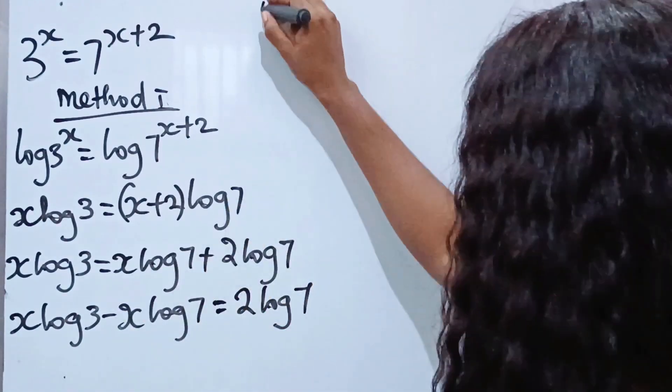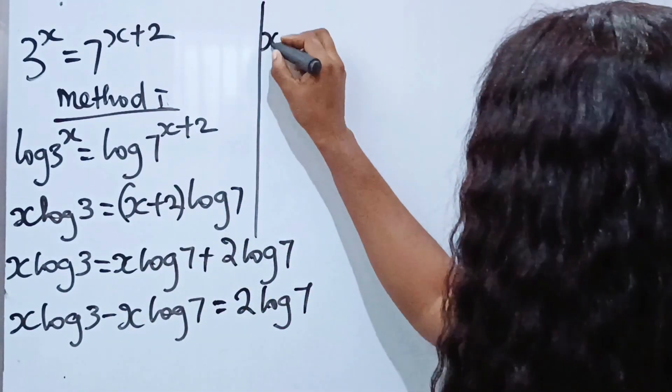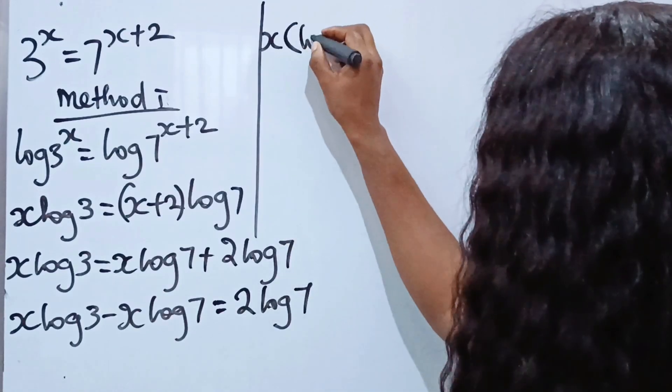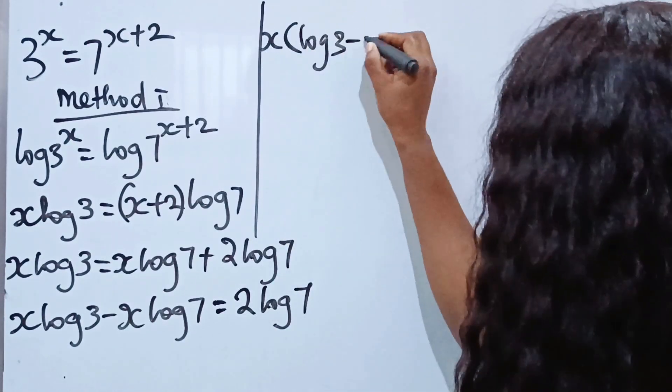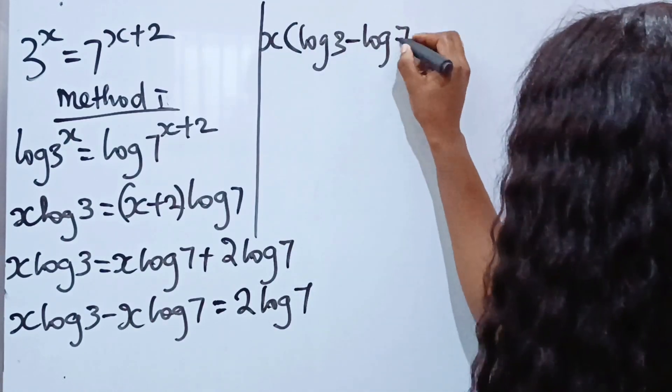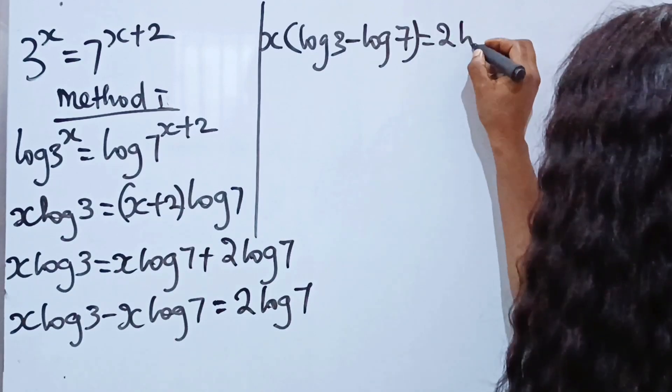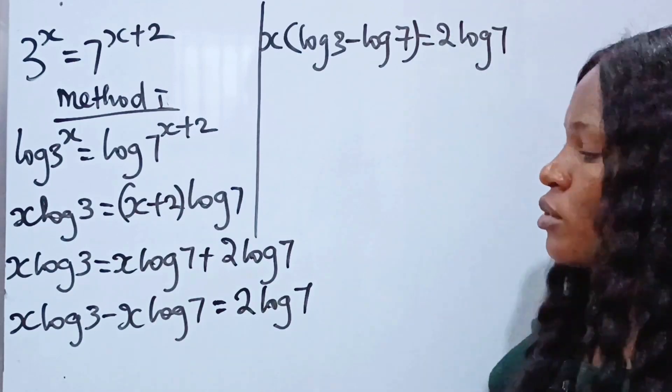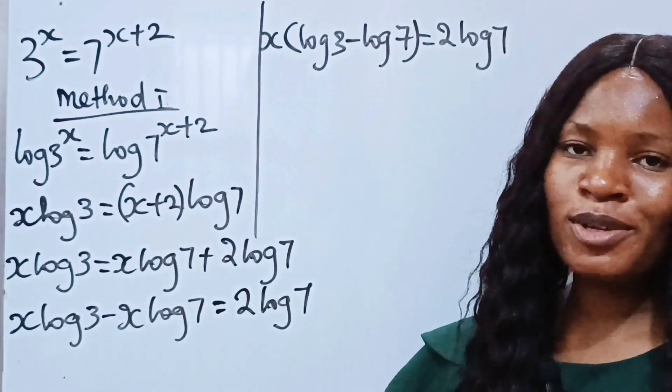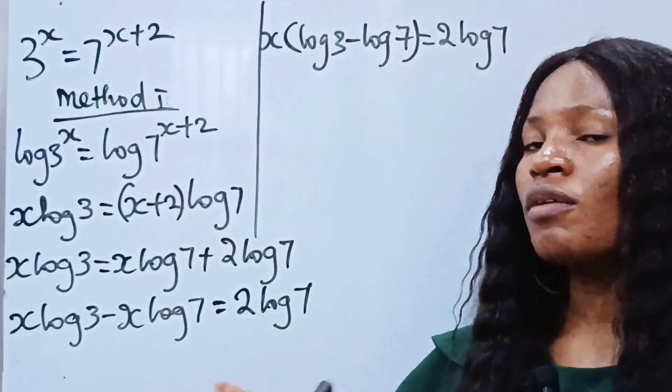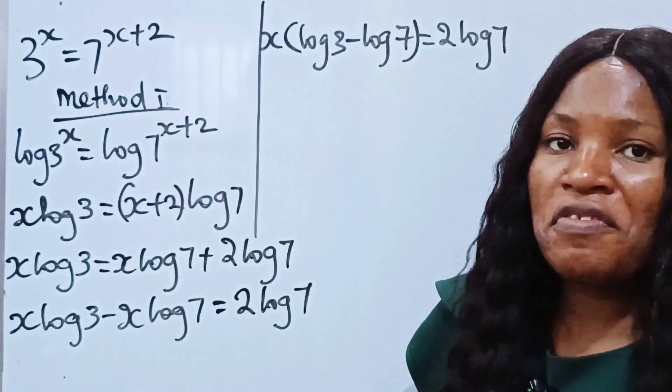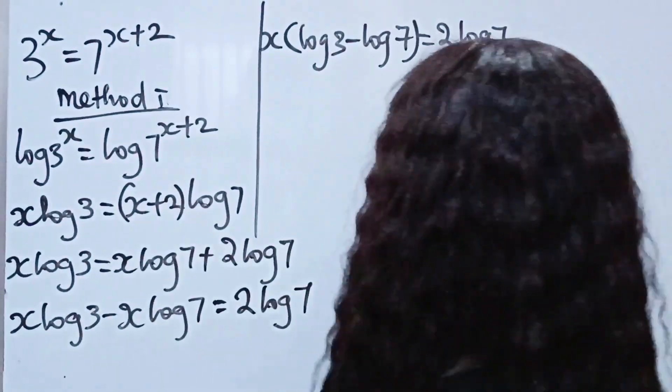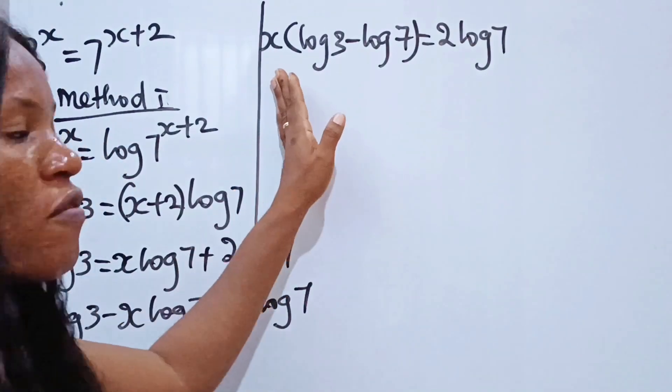Now let's factorize x out since we are looking for the value of x. So you have x bracket log 3 minus log 7 equals 2 log 7. I would like you to watch to the end and tell me which of these methods do you prefer.